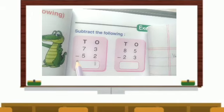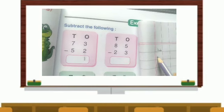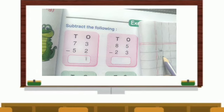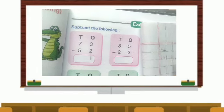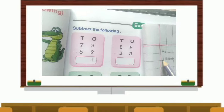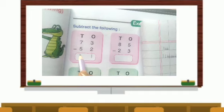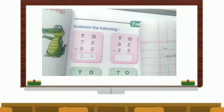Next is 7 minus 5. Draw seven lines: 1, 2, 3, 4, 5, 6, 7. Take away 5: 1, 2, 3, 4, 5. How many are left? 2. So 73 minus 52 is 21.